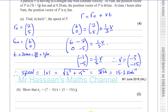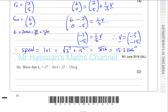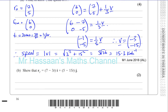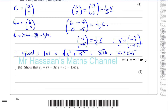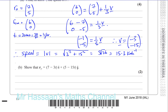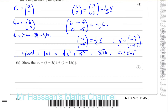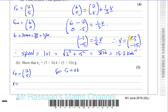For part b, it says show that rp = (7 − 3t)i + (5 − 15t)j. We want the general equation for the position vector, and as mentioned earlier, rp = r₀ + vt. We know r₀ is (7, 5) and the velocity vector is (-3, -15).